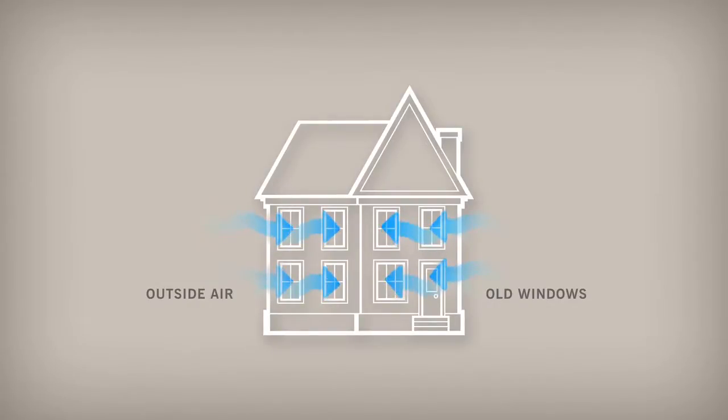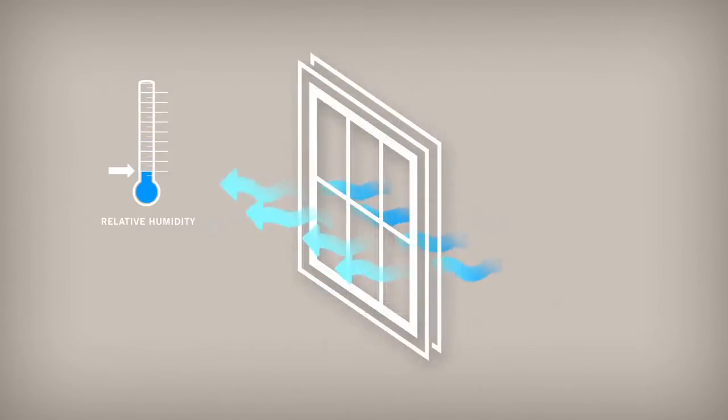When outside air leaks into your home through drafty windows, the relative humidity inside is lowered and condensation is less likely to form.